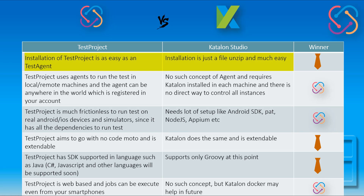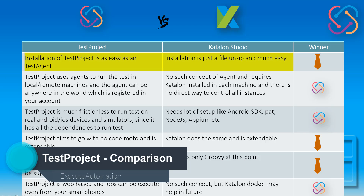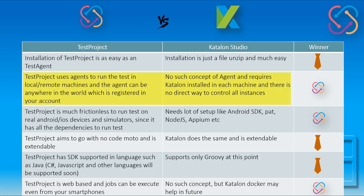Installation of TestProject is as easy as installing a test agent. In Katalon Studio the installation is just a file unzip, so the winner here is a tie. TestProject uses an agent to run tests on local or remote machines, and the agent can be anywhere in the world as long as it's registered in your account. In Katalon Studio there is no such concept — it requires Katalon installed on each machine with no direct way to control all instances centrally.